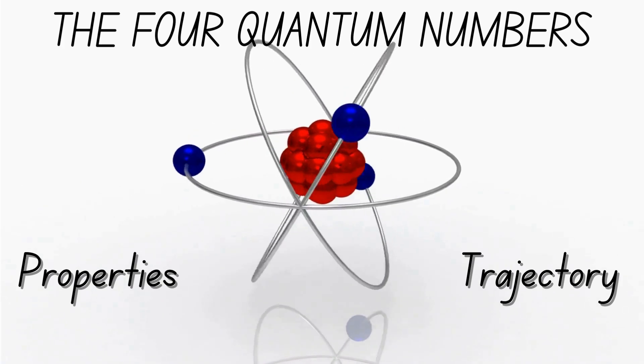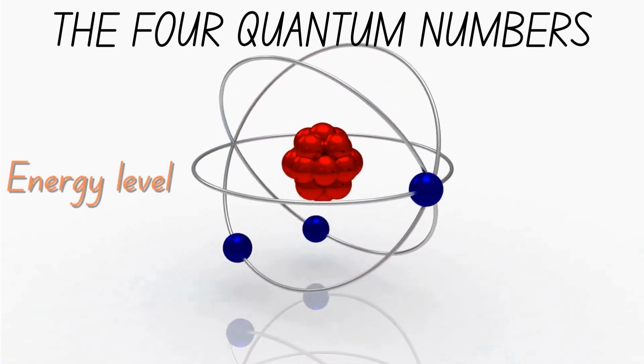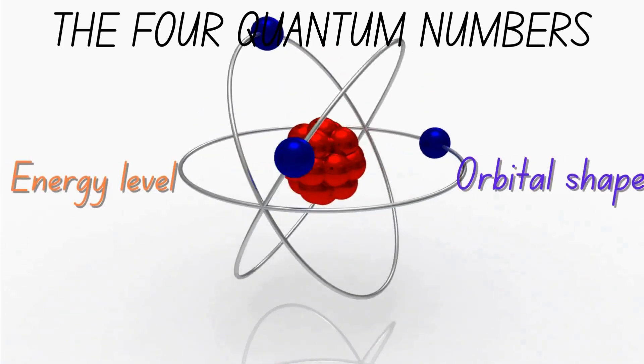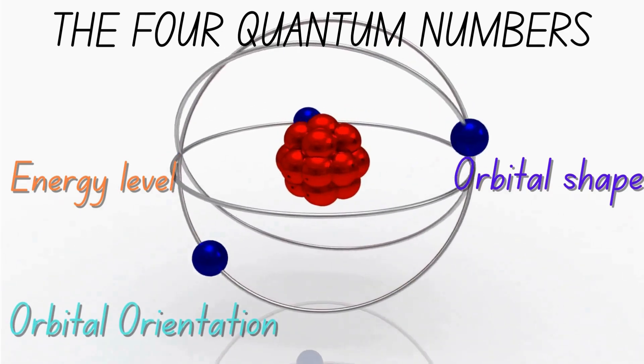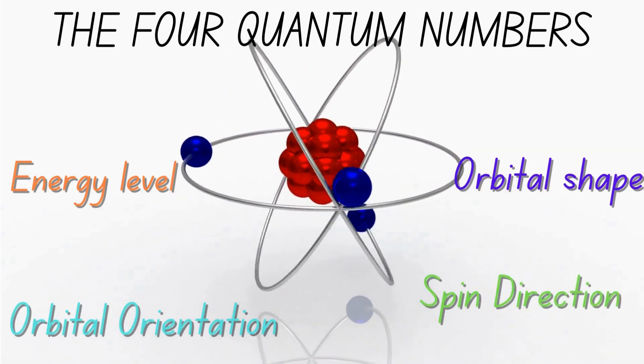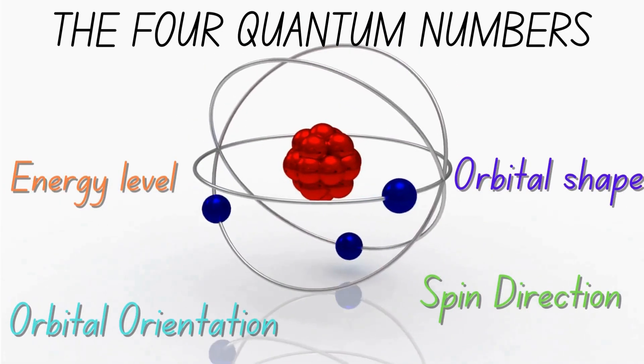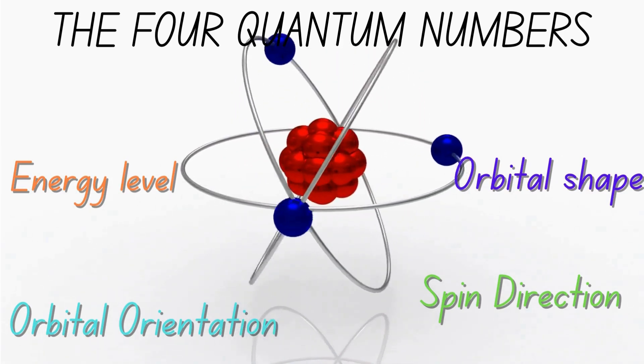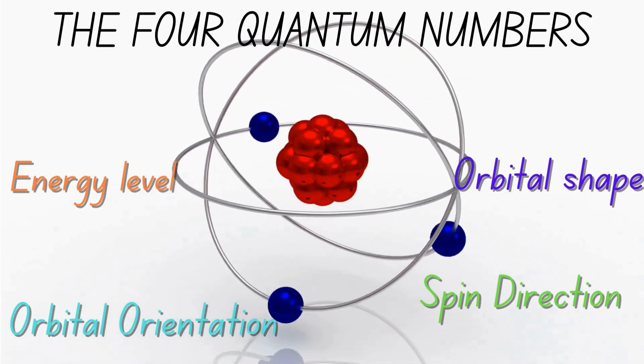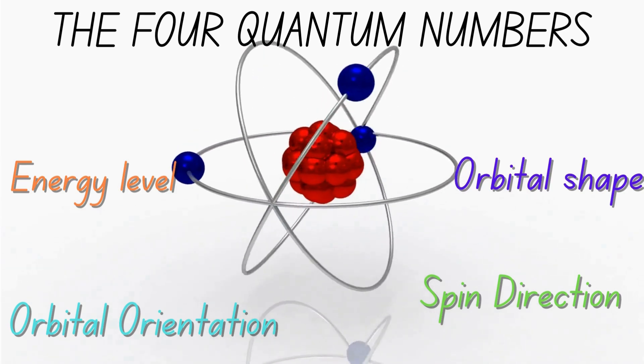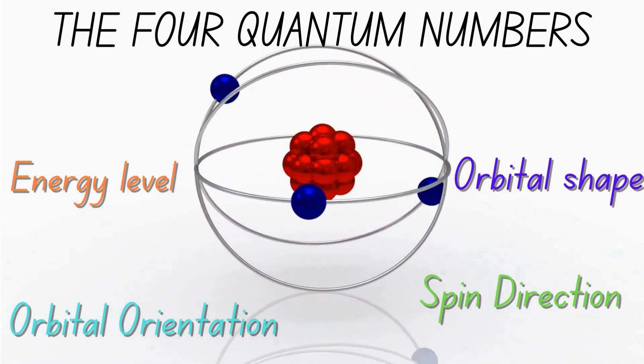They provide information about the electron's energy level, the shape of its orbital, the orientation of the orbital in space, and the direction of its spin. Together, these four quantum numbers act like an address to pinpoint an electron's position and state within an atom.